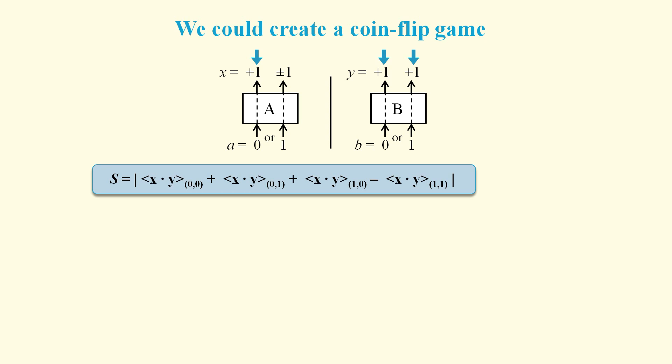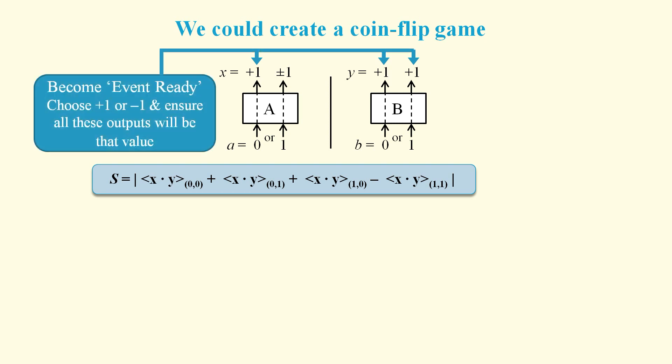They will all be +1 or all be -1. When we have decided which of -1 or +1 to use, we get an event ready signal, which means we are ready to do a proper trial. The remaining output, which is for an input on the Alice side of 1, will be either +1 or -1 as it will be chosen at random.